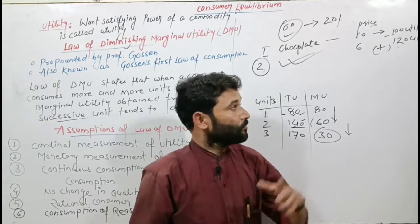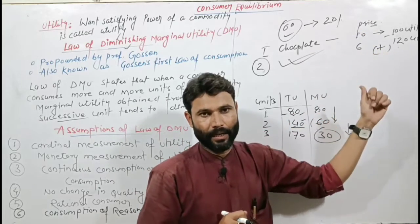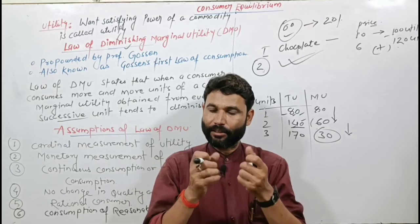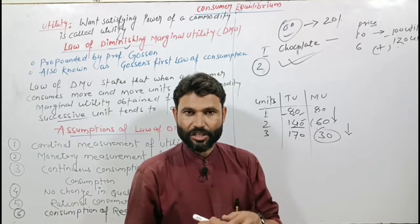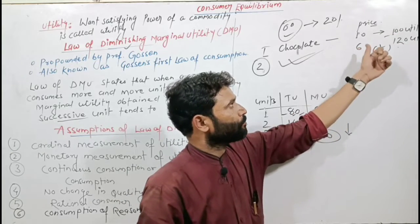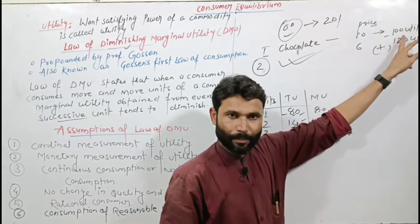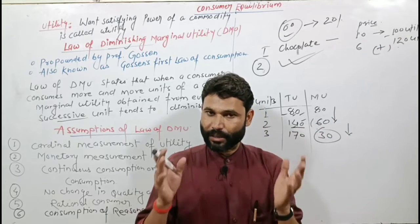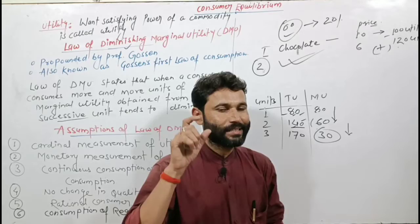Why did this happen? Because the price of the second chocolate was reduced. Utility is a psychological concept. Mr. Chikki felt good knowing he paid less — only 6 rupees — so his overall experience improved, giving him 120 utils instead of the expected lower amount.